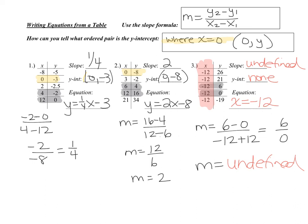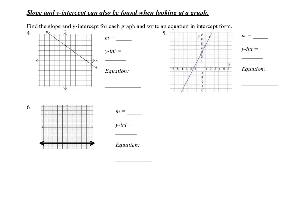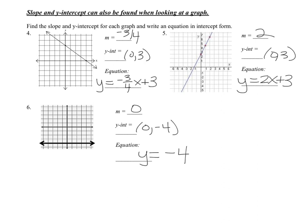Now let's take a look at some graphs. All of these graphs have a slope and a y-intercept. Stop the video, find your slope and y-intercept, and come up with your equation, then tune back in. The equation for the first one should be y equals negative three-fourths x plus 3. The second one is y equals 2x plus 3. The last one is a horizontal line, so it's y equals negative 4. If you started with y equals 0x minus 4, that's fine, but you have to fully simplify it to y equals negative 4.